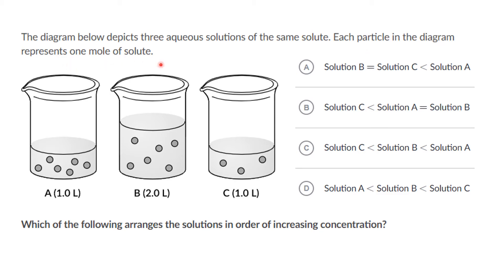The next question: the diagram below depicts three aqueous solutions of the same solute. Each particle represents one mole of solute. Which of the following arranges the solutions in order of increasing concentration? The three beakers A, B, and C have different volumes, so it becomes difficult to compare just by counting particles. Molarity is a unit of concentration calculated as moles of solute divided by volume of solution in liters.